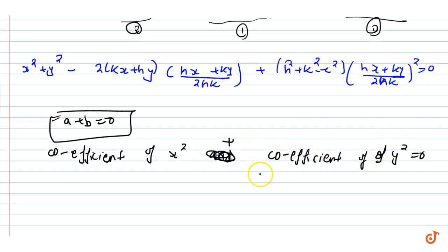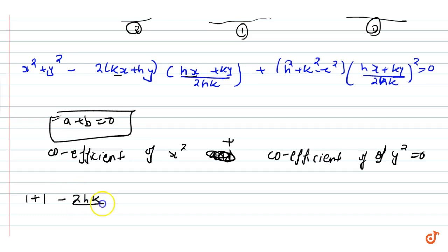We now look at where the coefficients of x² and y² appear in our equation. The first term gives coefficient 1 for x² and 1 for y². From the middle term, we get minus 2hk divided by 2hk contributing to the x² and y² coefficients. We concentrate only on those terms.